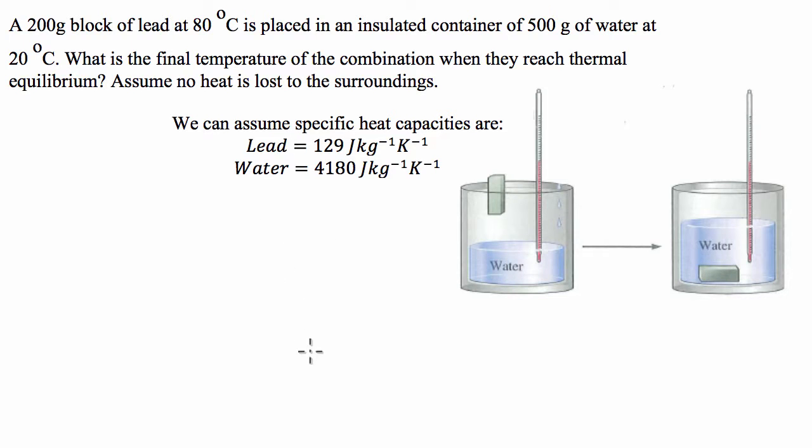G'day guys, a student of mine is having trouble with this physics question, so I thought I'd make a video and work through it. So we have a 200 gram block of lead at 80 degrees, which is placed in an insulated container of 500 grams of water at 20 degrees. What is the final temperature of the combination when they reach thermal equilibrium? Assume no heat is lost to the surroundings.